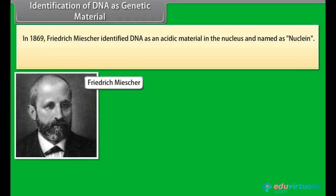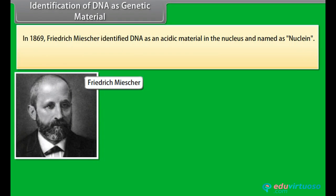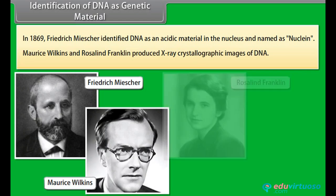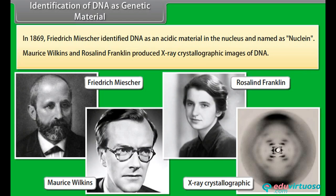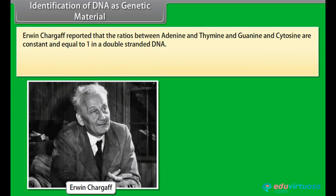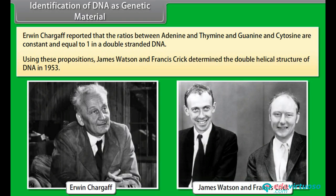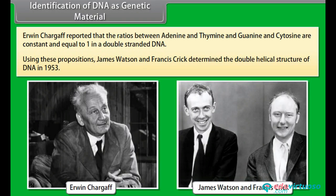Identification of DNA as genetic material. In 1869, Frederick Miescher identified DNA as an acidic material in the nucleus and named it nuclein. Maurice Wilkins and Rosalind Franklin produced X-ray crystallographic images of DNA. Erwin Chargaff reported that the ratio between adenine and thymine, and guanine and cytosine, are constant and equal to 1 in a double-stranded DNA. Using these propositions, James Watson and Francis Crick determined the double helical structure of DNA in 1953.